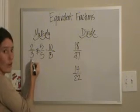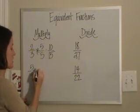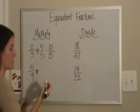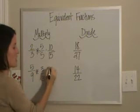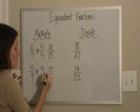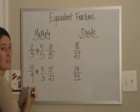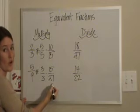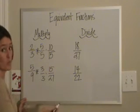That means that two-thirds and ten-fifteenths are equivalent. For five-ninths, I'm going to choose three. Five times three is fifteen, and nine times three is twenty-seven. That means that five-ninths and fifteen-twenty-sevenths are equivalent, but those aren't the only possible answers. It's just one.